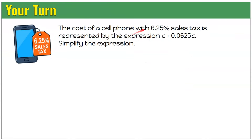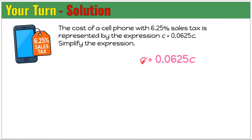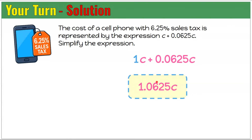Your turn. The cost of a cell phone with 6.25% sales tax is represented by C plus 0.0625C. Simplify the expression. The coefficient of C is 1, so these are like terms with the same variable and exponent. Adding the coefficients: 1 plus 0.0625 gives 1.0625C. This represents paying 106.25% of the cost of the cell phone — the original price plus 6.25% tax.